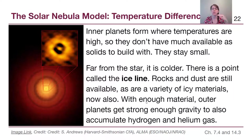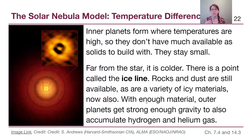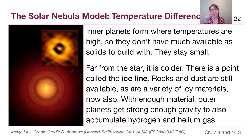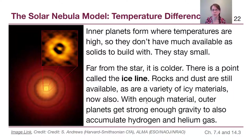Hydrogen and helium gas exists throughout the disk, but you need strong enough gravity to hold on to it. Jupiter and Saturn built big enough rocky and icy cores to take in a lot of hydrogen and helium. That's why Jupiter is so much more massive than Earth — it reached the threshold to sweep up gas and form gaps in the disk. A real image of a forming star shows exactly those gaps where planets are forming and sweeping up surrounding material.